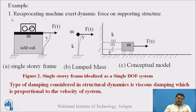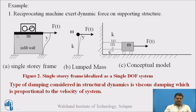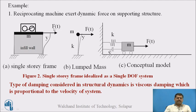For damped forced vibration, consider a real physical problem: a single-story frame with infill wall, where the total mass of the infill wall is lumped at the floor level. This frame supports a reciprocating machine. When the machine operates, it induces vibration and generates a time-dependent force F(t) acting on the structure, making this a problem of forced vibration.